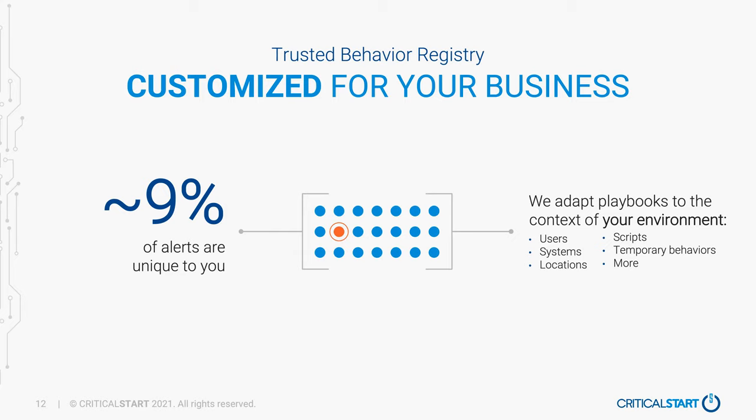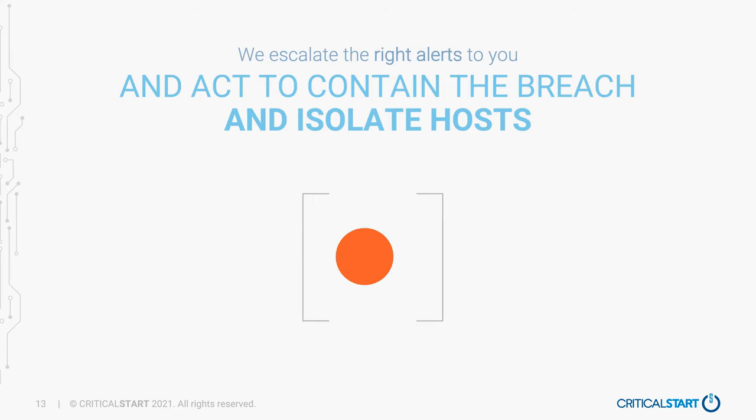We don't apply a cookie-cutter approach of here are the use cases, here are the detections, that's all you get. Instead, we want to turn on as many detections as possible, and then understand what known good looks like in every environment so that we can scale looking at everything that actually matters — regardless of low, medium, high, or critical priority. If it's not known good, a human should look at it. That's how we get great scale for MDR services.